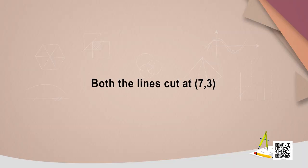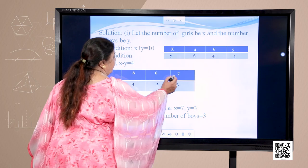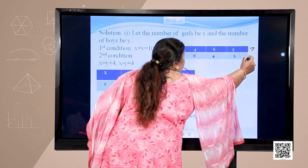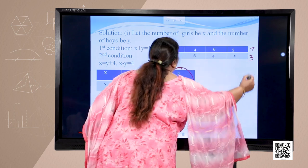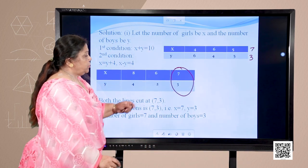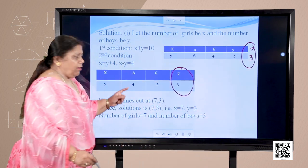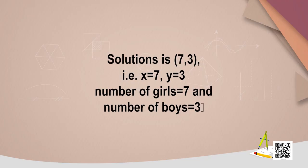Both the lines are meeting at which point? At (7, 3) — because if I take x as 7, the value of y will be 3. So this is the common solution for the pair of equations. The solution is x is equal to 7 and y is equal to 3. Number of girls is 7 and number of boys is 3.